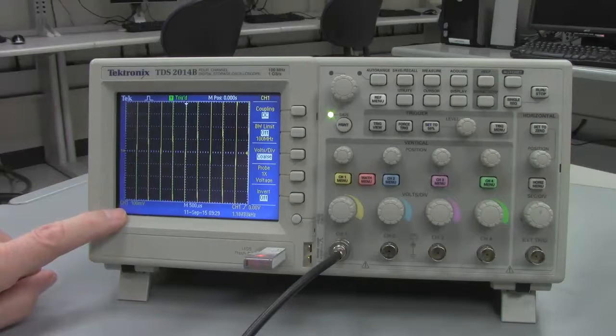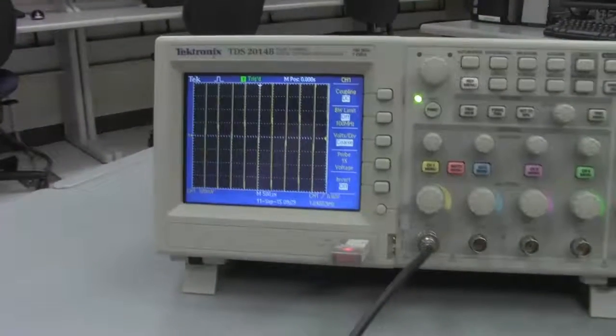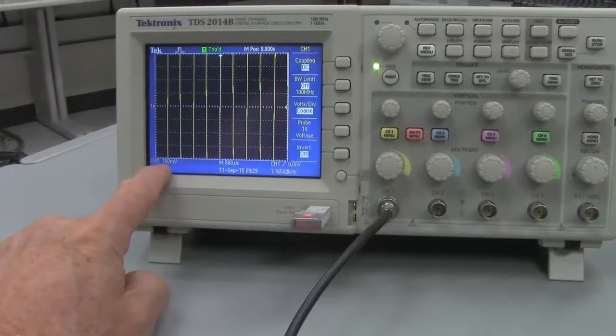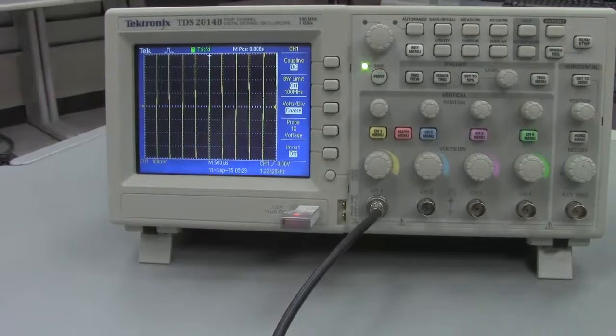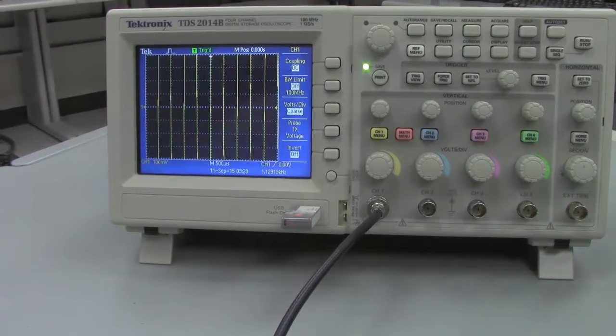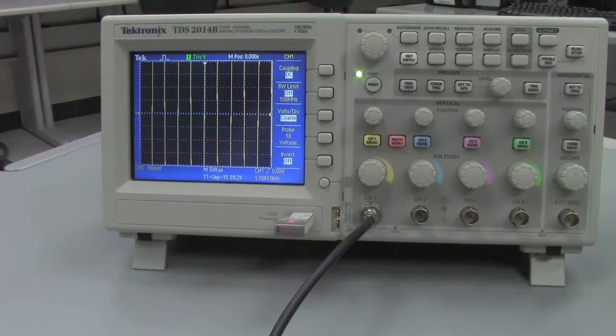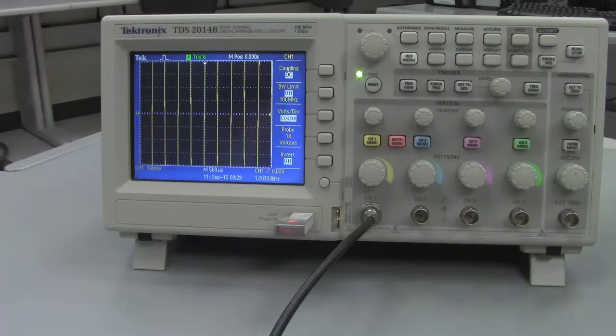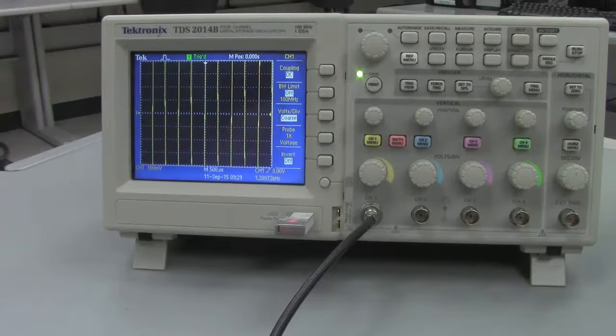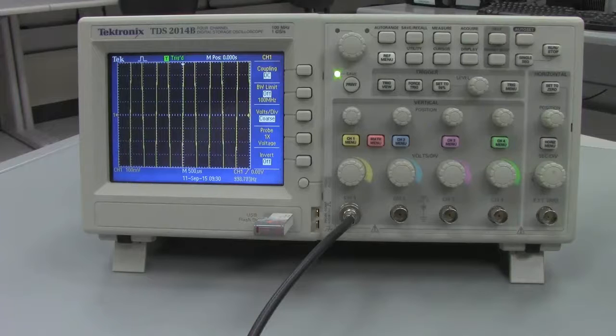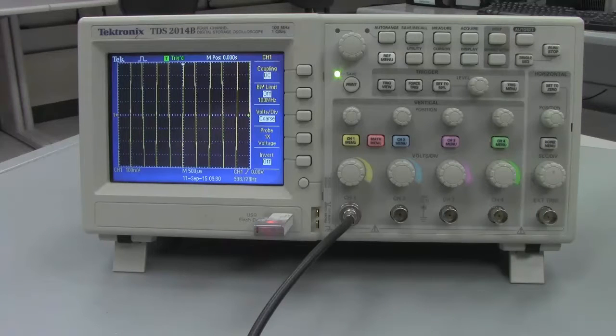And we're now displaying using a 1x probe. You'll notice over here, down here in the lower left-hand corner, it tells us that on channel 1, the vertical scale is 100 millivolts per division. Now we're going to adjust this until it's about an 8 volt peak-to-peak signal.